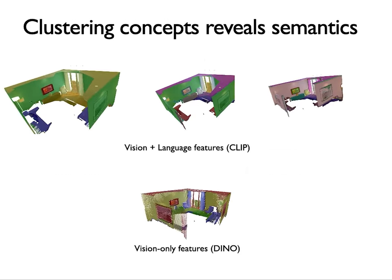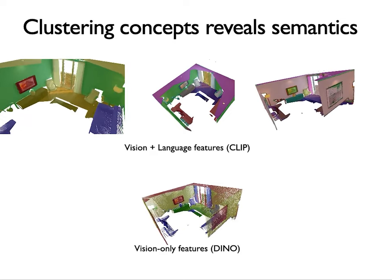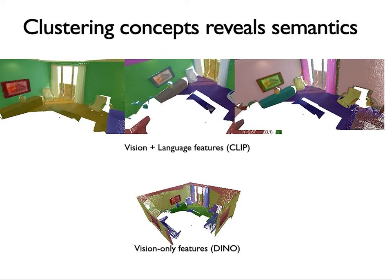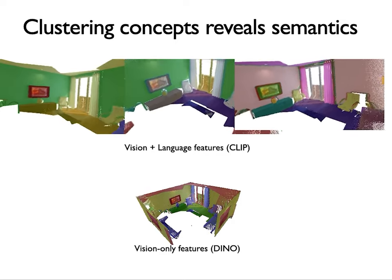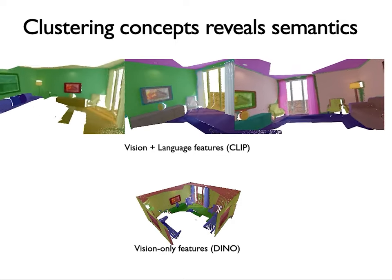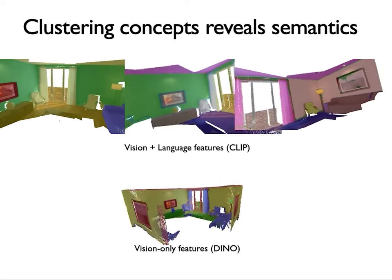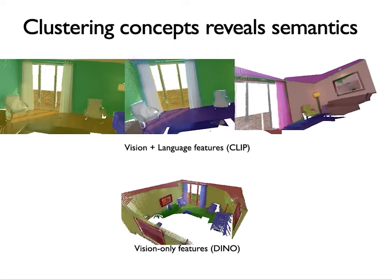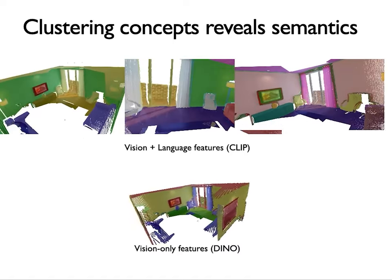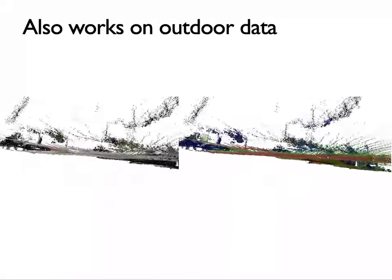Let's jump back into our demos. Once we construct a map with our features, we can explore the semantic concepts they encode by visualizing clusters computed over the points in our scene. Here we have examples with features from two different foundation models, and we can see that in both cases the clusters naturally correspond to semantic concepts. Moreover, this works equally well on outdoor data.